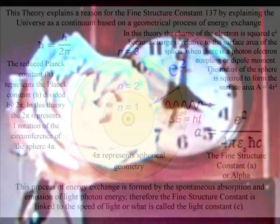This process of energy exchange is formed by the spontaneous absorption and emission of light photon energy. Therefore, the fine structure constant is linked to the speed of light, or what is called the light constant c.